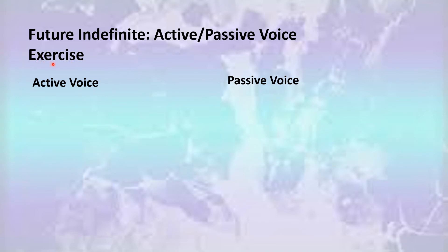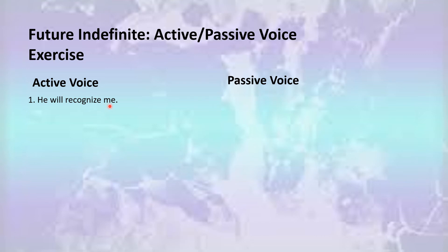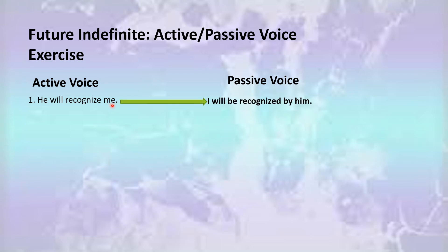Let's do some exercises. Your active sentence is: 'He will recognize me.' You can see that in this sentence 'he' is the subject, 'will' is the auxiliary verb, 'recognize' is the first form of the verb, and 'me' is the object. You will take out the object and place it at the start of the sentence. Your sentence would look like this: 'I will be recognized by him.'